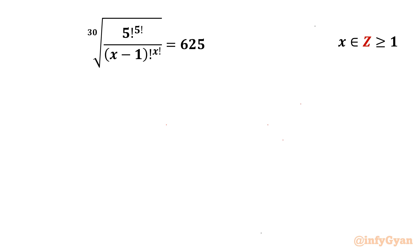Welcome back to Infigyan, my dear friends. In this video, we are going to take up an interesting exponential problem. It is: 30th root of 5 factorial raised to the power 5 factorial, over x minus 1 factorial raised to the power x factorial, equal to 625, where x is an integer and greater than or equal to 1. I will demonstrate two ways to solve this problem.